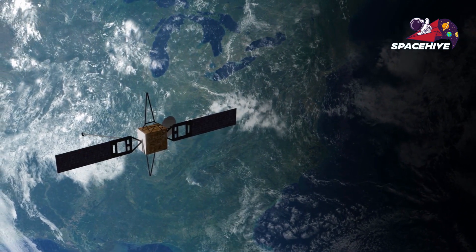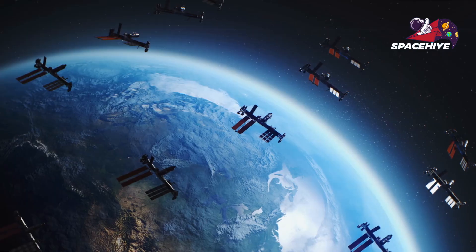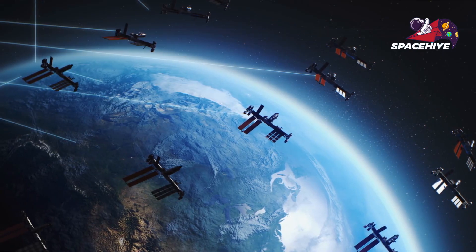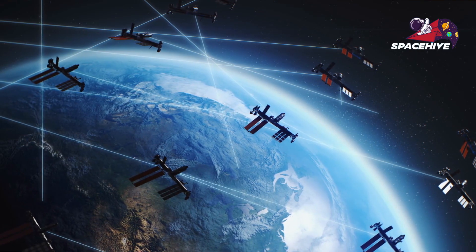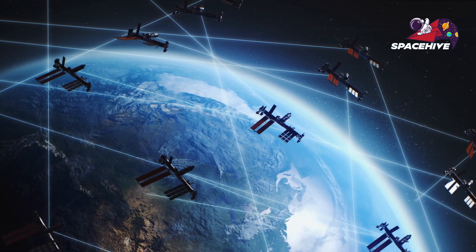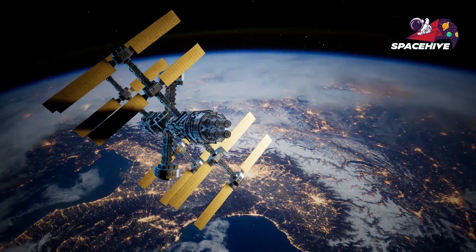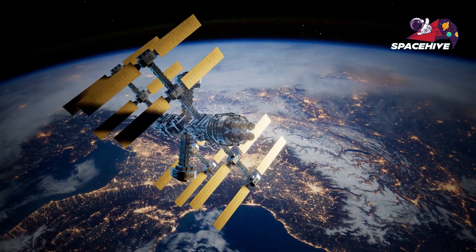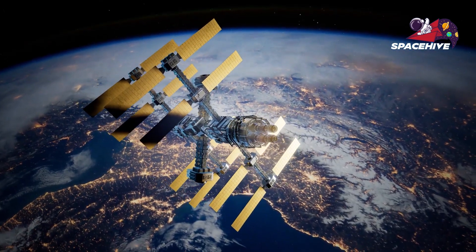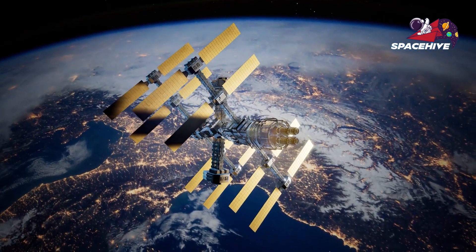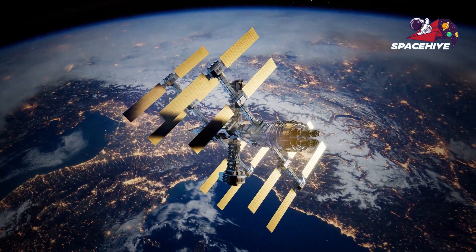Some of the oldest man-made objects in space, like the Vanguard 1 satellite, which was launched in 1958, are still up there, orbiting the planet in the exosphere. All in all, the Earth's atmosphere is a fascinating and complex system, and there is still so much we have yet to discover about it.